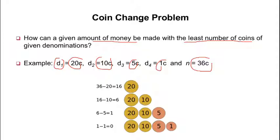Under the brute force approach — essentially an exhaustive search — we have to try every combination of 20 cent, 10 cent, 5 cent, and 1 cent coins. We list all possible combinations and find the one with the minimum number of coins. This is what the brute force approach does, and of course in terms of time it is more time-consuming.